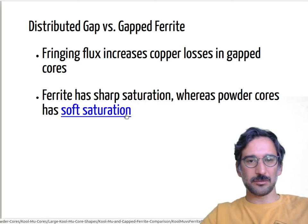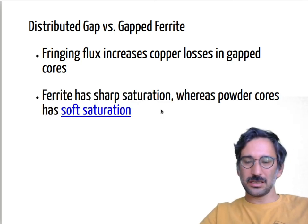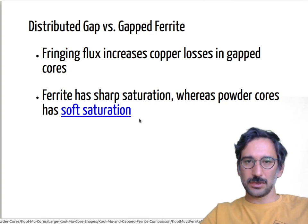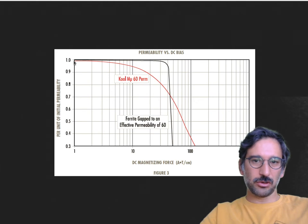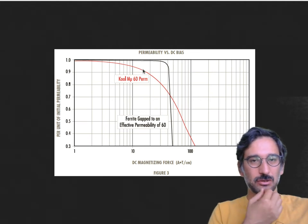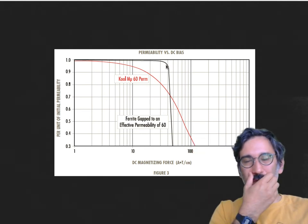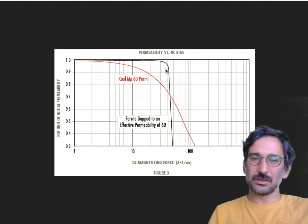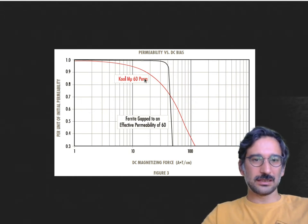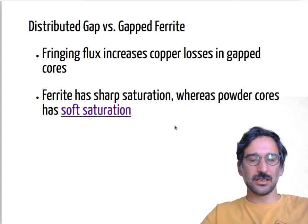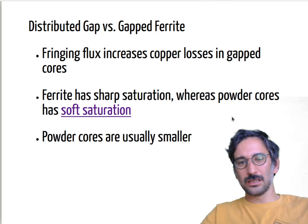Fringing flux increases copper losses in gapped cores. Also, ferrite typically has sharp saturation: as you increase current, the inductance drops very quickly once saturation begins, which can strongly affect converter performance. With Kool Mµ powder cores, the inductance rolls off more gradually, smoothing out converter characteristics. Powder cores are also typically smaller for the same energy storage.